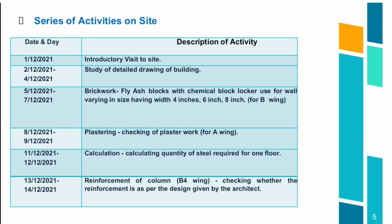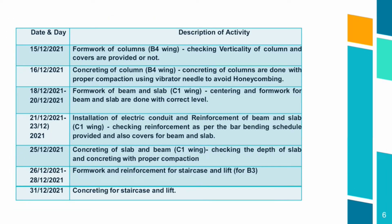From 13th to 14th day, it was about the reinforcement of column for B-wing. On the 15th day, it was about the formwork of columns for B-4-wing. On the 16th day, it was about the concreting of columns. From 18th to 20th day, it was about formwork of beam and slab. From 21st to 23rd day, it was about installation of electric conduit and reinforcement of beam and slab. On 25th day, it was about concreting of slab and beam. From 26th to 28th day, it was about formwork and reinforcement of staircase and lift. On the 31st day, it was about concreting for staircase and lift.